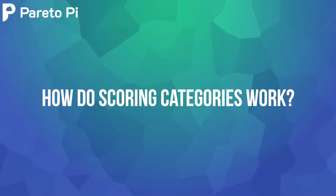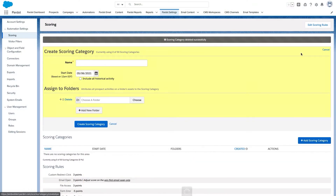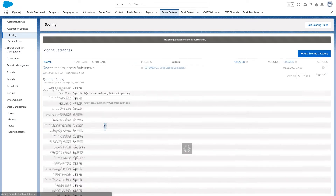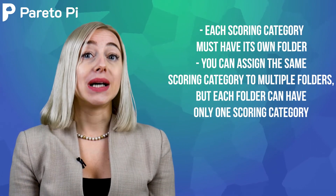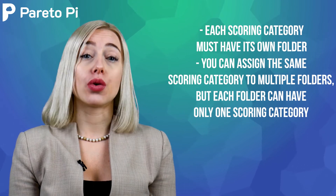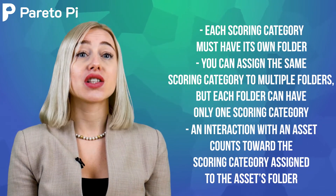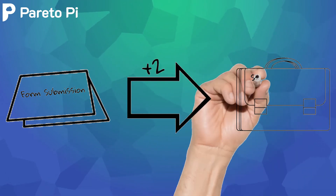So how do scoring categories work? Each scoring category must have its own folder. By placing all related assets in a folder and applying a scoring category to it, you will be able to make sure that prospects will be scored accordingly after interacting with an asset from each specific folder. You can assign the same scoring category to multiple folders, but each folder can have only one scoring category. An interaction with an asset counts towards the scoring category assigned to the asset's folder. For example, a form submission on a landing page is attributed to the scoring category assigned to the landing page folder.